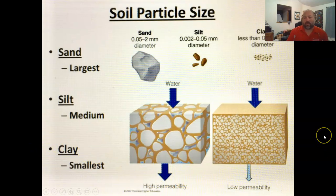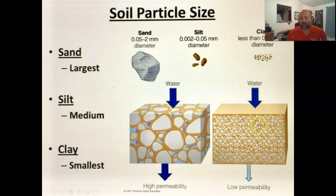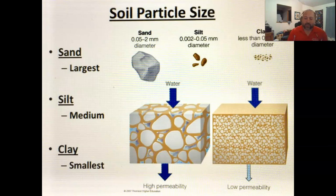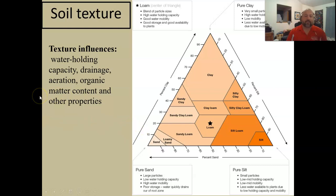Soil particle size is important because of pore space. Sand has big particles with lots of space in between, so water goes right through it. Clay has really small particles with a lot of surface area — water goes through it, but very, very slowly. Any time you see pooled water — a reservoir, lake, or river — the soil has a very high clay content, because that's how it holds water up above. Clay texture is a lot like Play-Doh. Texture will influence your water holding capacity, drainage, aeration, organic matter content, and other properties.